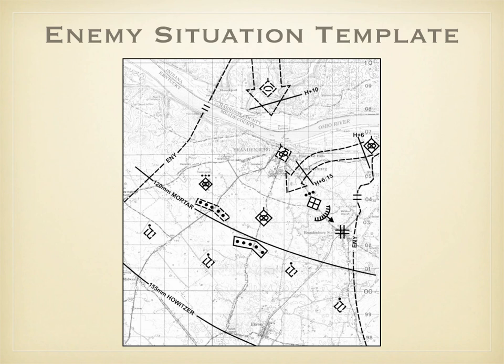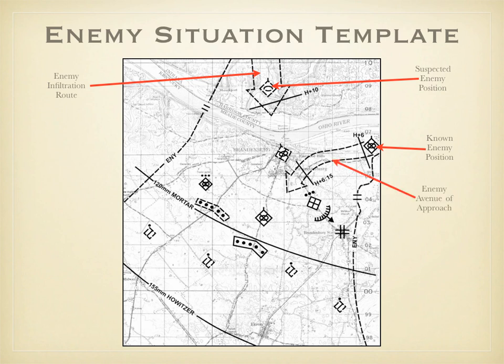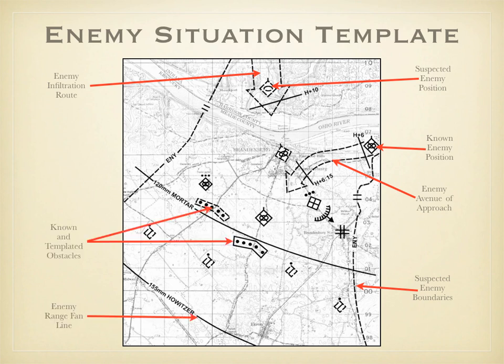Military symbols are also used to create enemy situation templates. This enemy situation template contains the following elements: enemy infiltration routes, suspected and known enemy positions, enemy avenues of approach, suspected enemy boundaries, the range of enemy artillery, obstacles, and enemy observation posts.